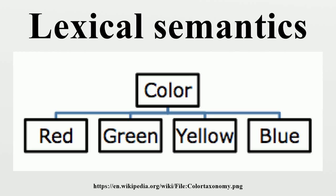Hyponymy refers to a relationship between a general term and the more specific terms that fall under the category of the general term. For example, the colors red, green, blue and yellow are hyponyms — they fall under the general term of color, which is the hypernym. Hyponyms and hypernyms can be described by using a taxonomy, as seen in the example.